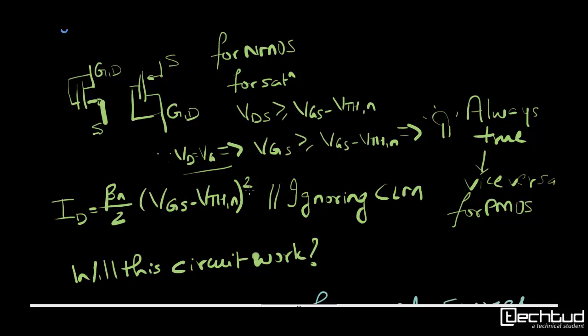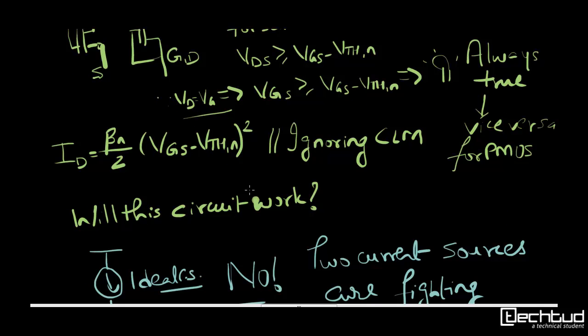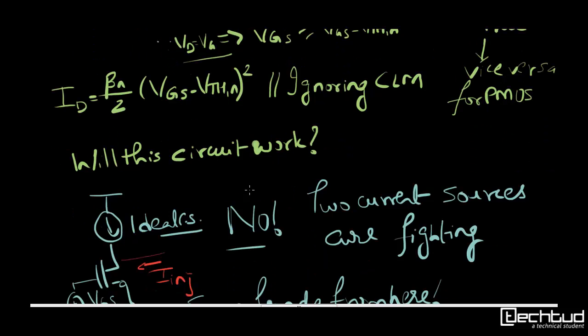So if we ignore channel length modulation, it follows the square law equation. That is ID equals VTN by 2 VGS minus VTHN whole square. Now let us see one circuit.